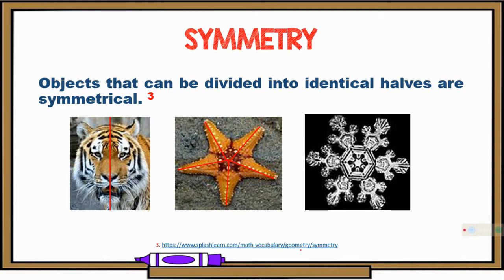Now, let's look at this snowflake. How many times can we divide it into portions and still arrive with identical parts? We can divide it into six parts and still arrive with identical portions. Therefore, this is a six-fold symmetry.